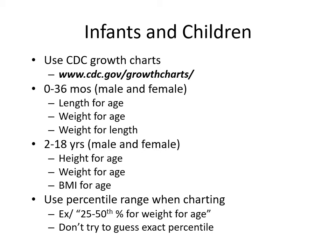For infants and children we use CDC growth charts. For 0–36 months we assess length-for-age, weight-for-age, and weight-for-length. From ages 2–18 years we monitor height-for-age, weight-for-age, and BMI-for-age. These are recorded using percentile ranges — for example, the patient is between the 25th and 50th percentile for weight-for-age, as we do not need to determine an exact percentile.